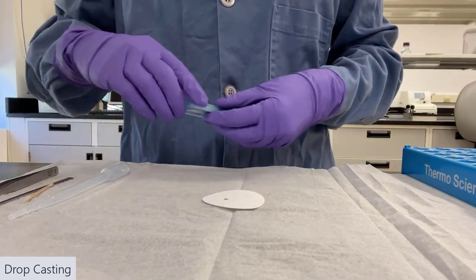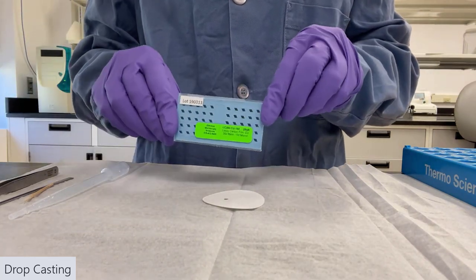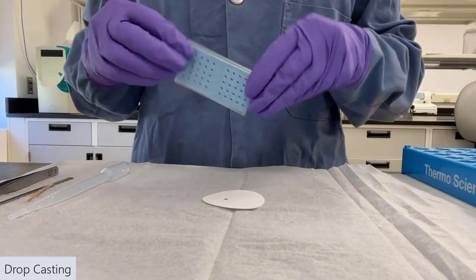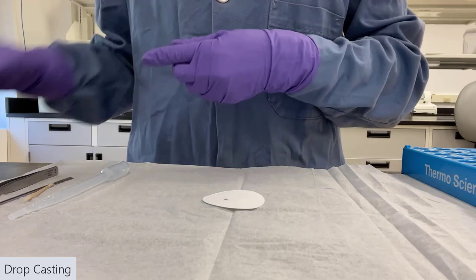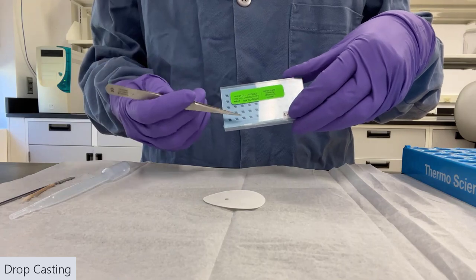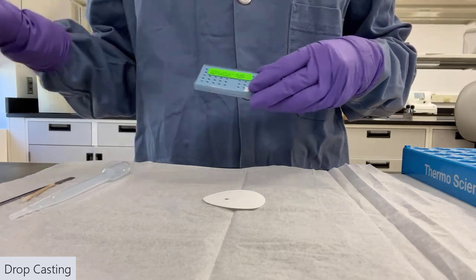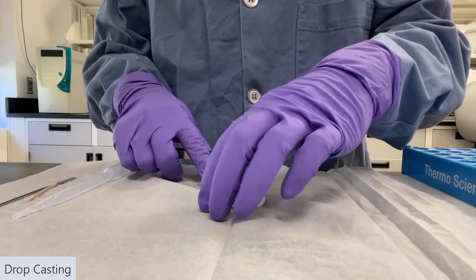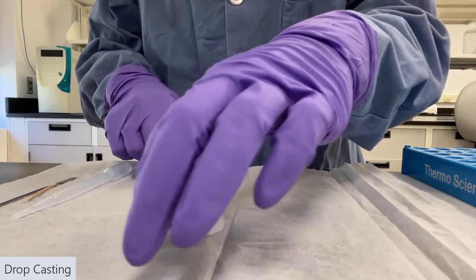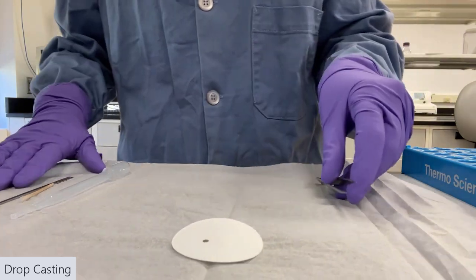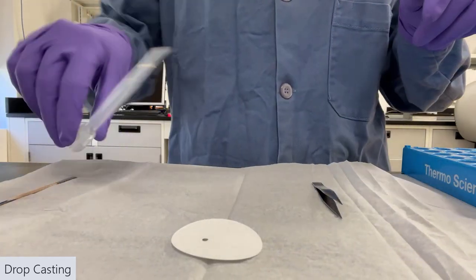Then we're going to grab a piece of filter paper and a clean TEM mesh grid. An empty grid box is useful, too. So then we will use some sharp tweezers to handle our grids, put an empty grid onto the filter paper, which I've already done. And then we're ready to actually do the drop casting.